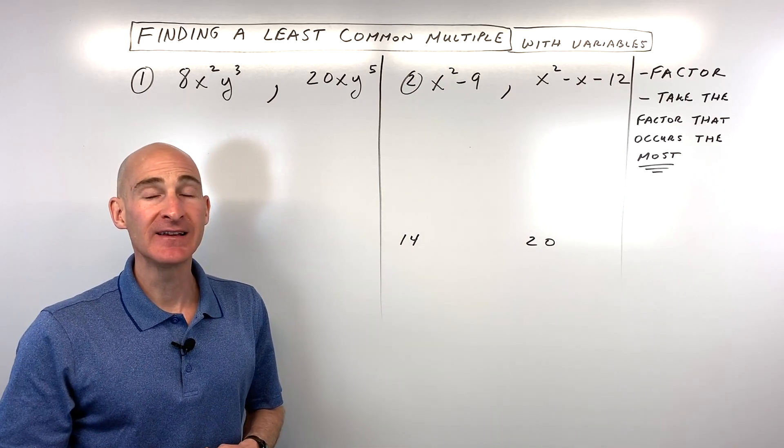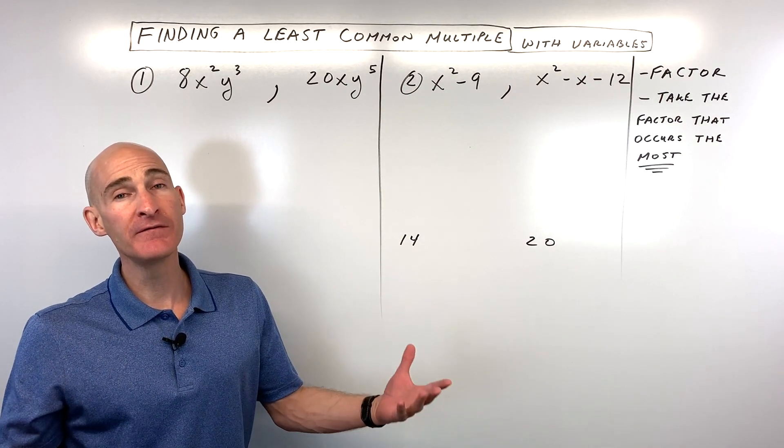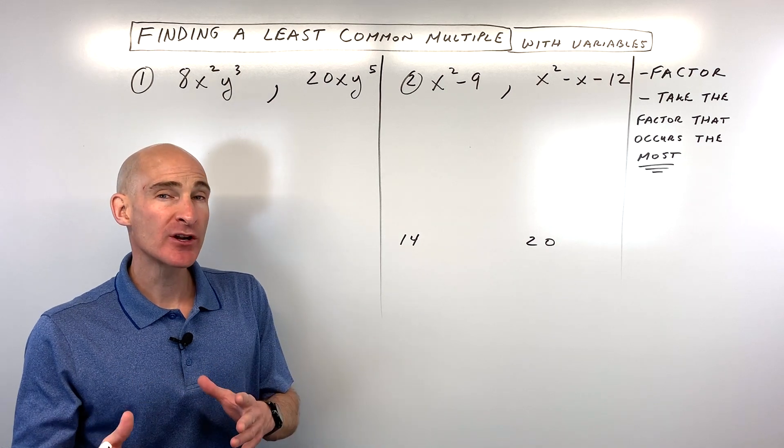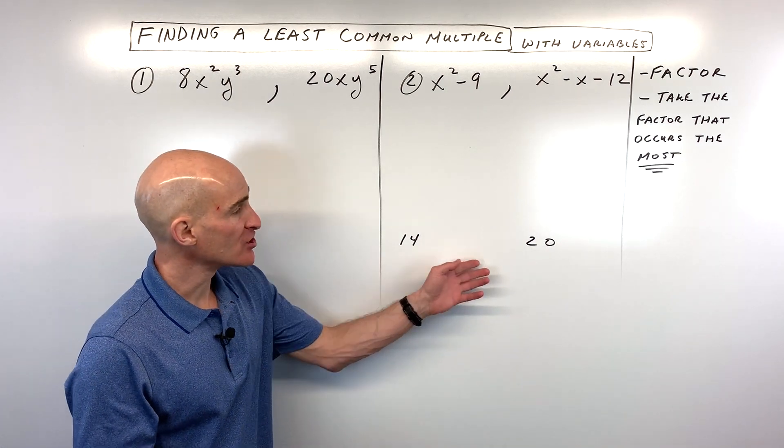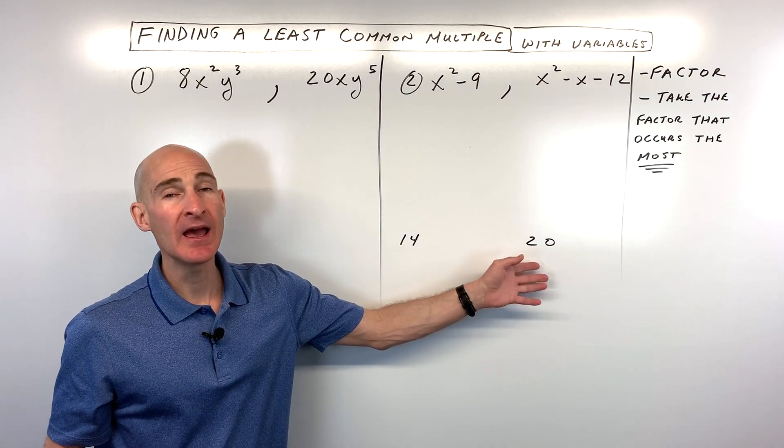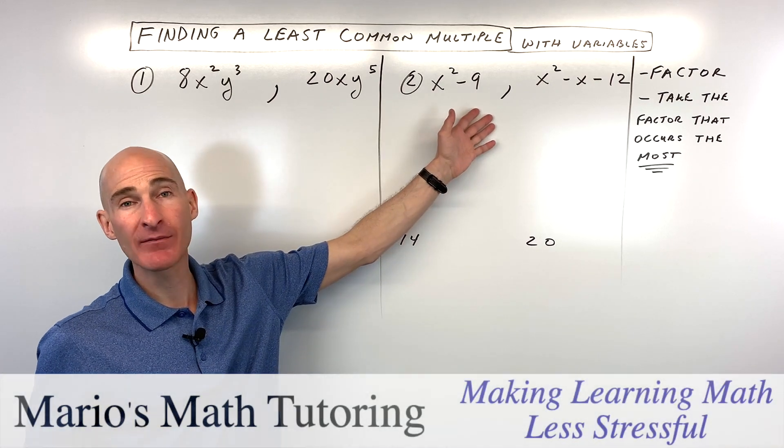In this lesson, you're going to learn how to find the least common multiple involving variables. First, I want to show you a simple example involving just two numbers like 14 and 20, and then we'll apply it to find least common multiple with variables.